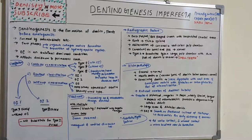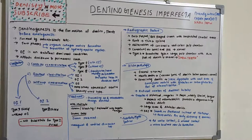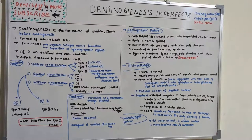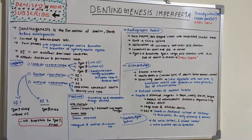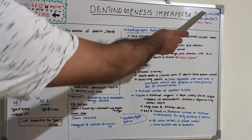Moving on to treatment, the main goal is to prevent loss of enamel and dentin through attrition. In mild to moderate cases, veneering, bleaching, and restorative procedures such as composites and amalgam can be used — amalgam for posterior teeth and composites for anterior teeth. In severe cases, prosthesis such as crown placement is needed. Maintaining vertical dimension is always important, as it is lost due to attrition.